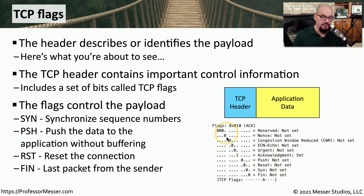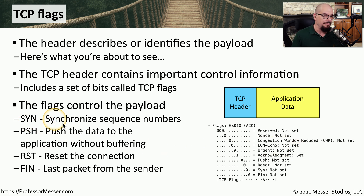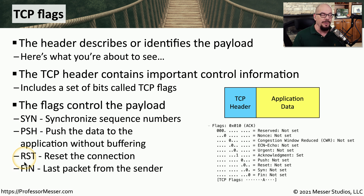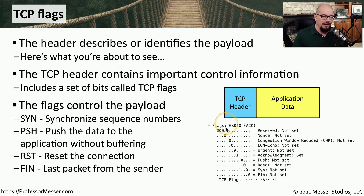For example, we can look at the flags in this particular protocol decode and see that one flag has been set to one, meaning the data contained within this TCP part of the packet is acknowledgment data. You can see a number of different flags: if the SYN flag is set, that means there is a synchronization of sequence numbers occurring. If the PUSH flag, or PSH flag, has been set, it pushes the data to the application without buffering anything else that might be incoming. There's also a RESET flag, or RST, that resets the connection, and a FIN flag that designates that this is the last packet that will be sent by the sender. By turning on or off different flags, we can change how a device interprets the rest of the data being sent using that TCP header.